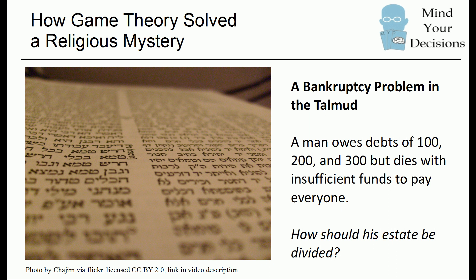This is going to be a little involved, so I'm going to cut right to the chase and get to the problem. This appears as a bankruptcy problem in the religious document the Talmud. The setup is that a man owes debts of 100, 200, and 300, but he does not have enough money to pay everyone off. How should his estate be divided among these three creditors?